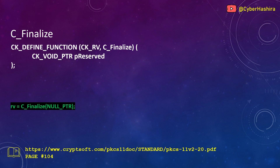C_Finalize marks the end of a cryptokey session, after which an application is no longer a cryptokey application. It finalizes the memory buffer and should be the last PKCS11 function called. You can read about it on page 104. It takes one argument reserved for future use — just pass null. Like other PKCS11 functions, it returns CKRV.